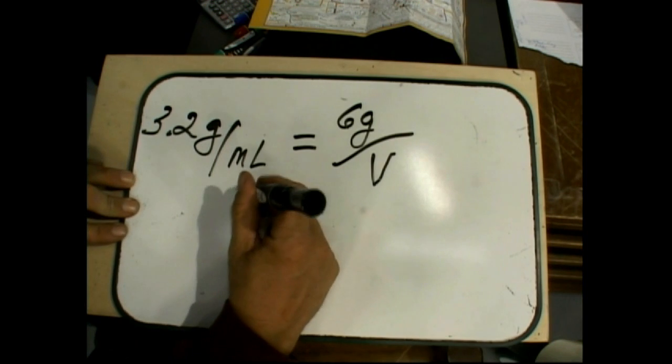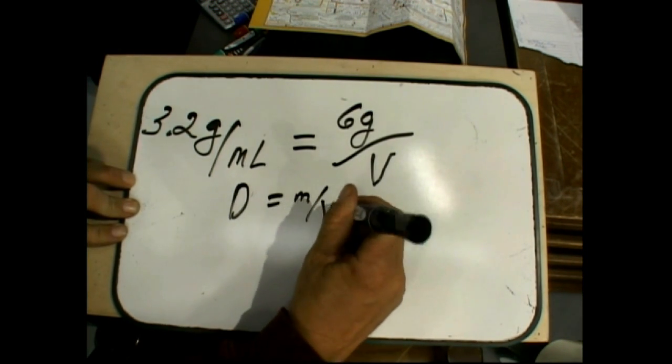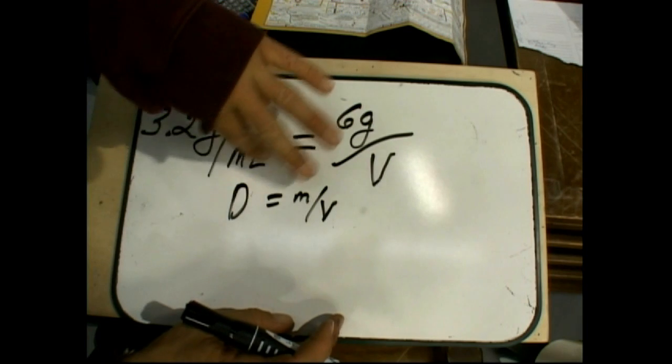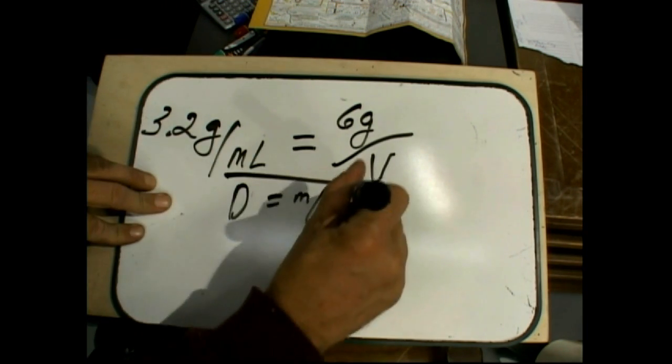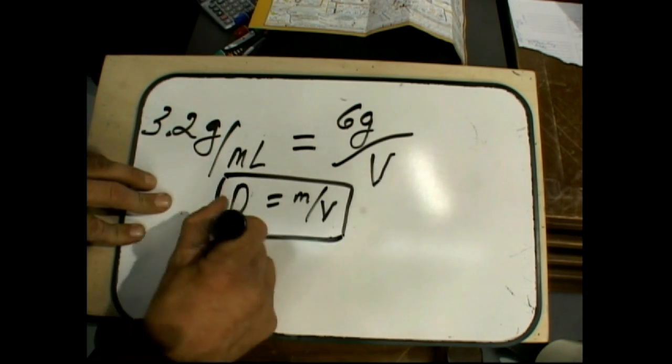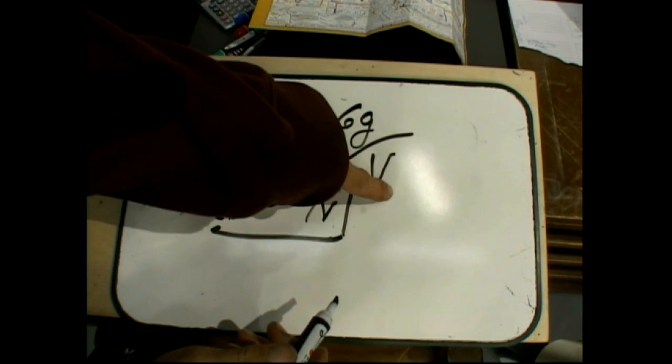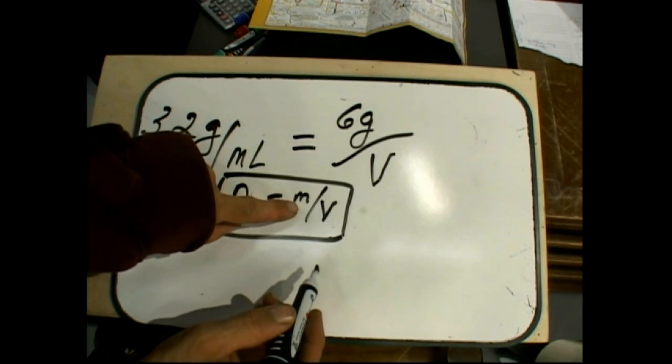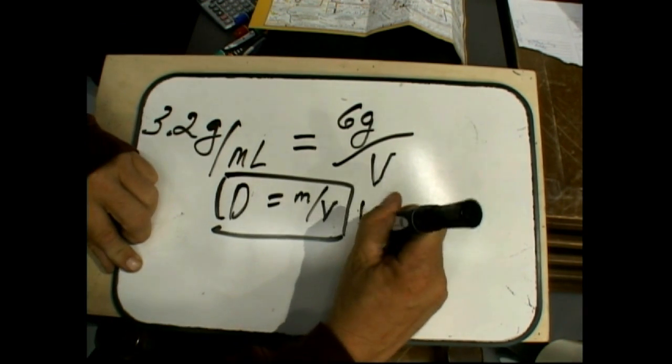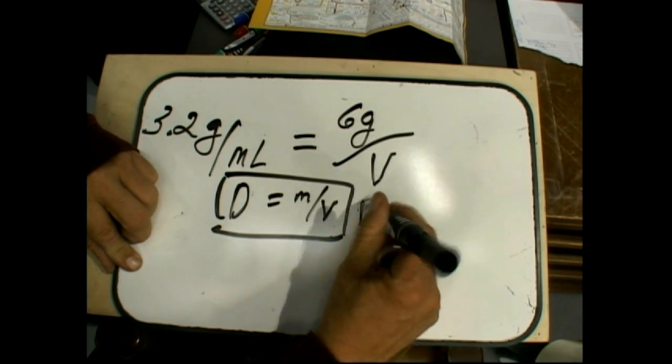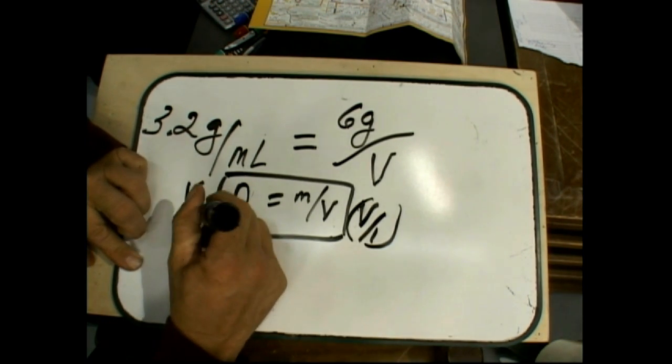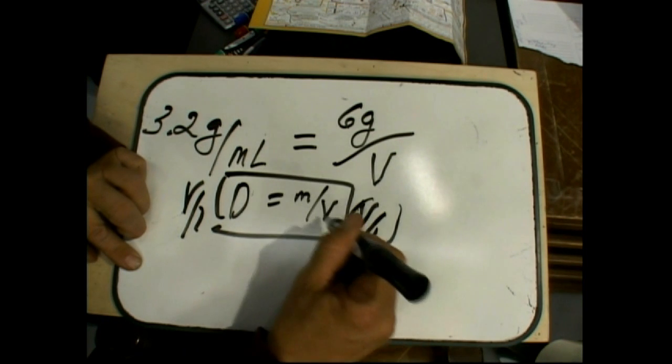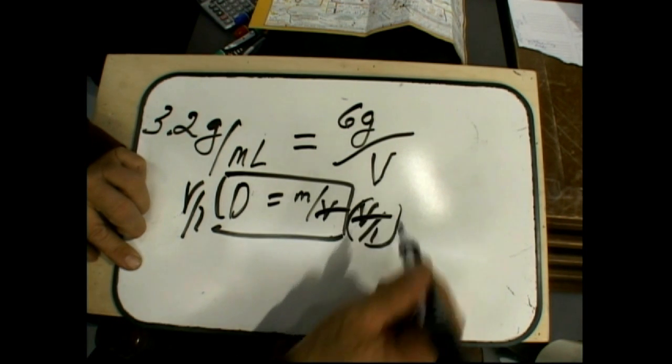So what you'll be able to do is use algebra here. We know that D equals M over V. So what we want to do is rearrange the symbols before we put the numbers in there. So we want to know what the volume is. Multiply both sides by the volume. Over one, they would call it.